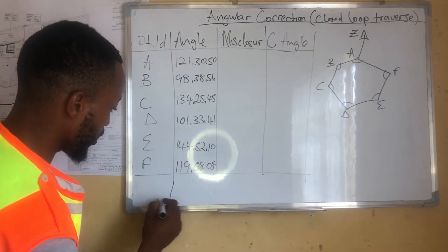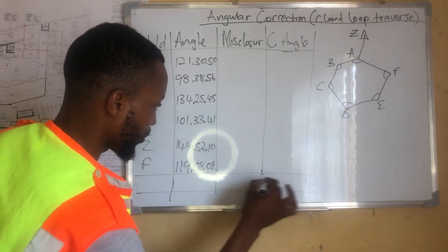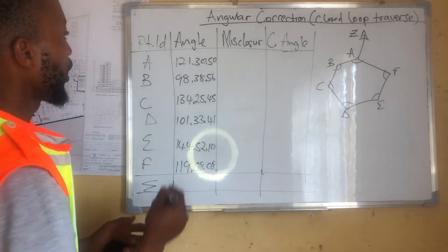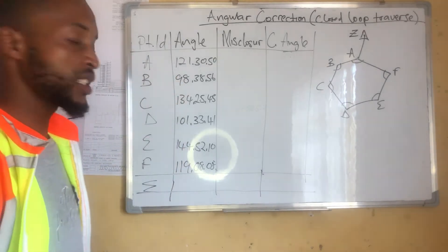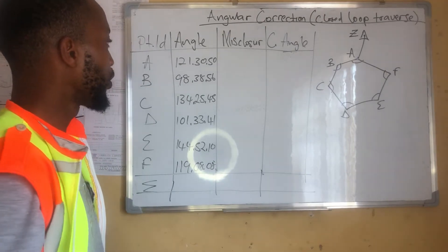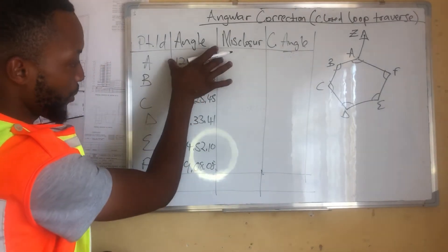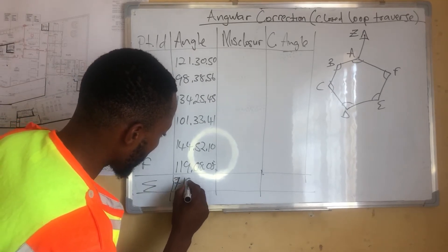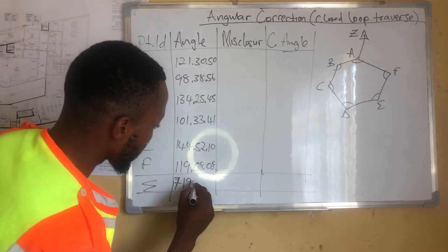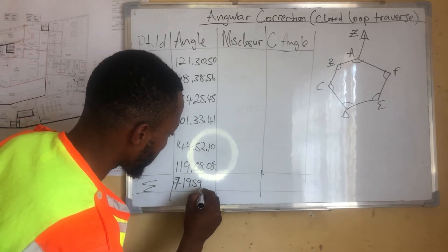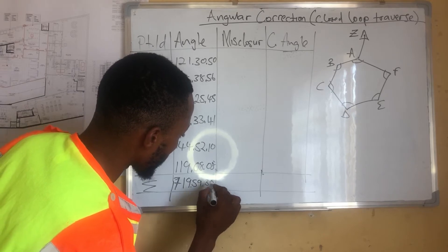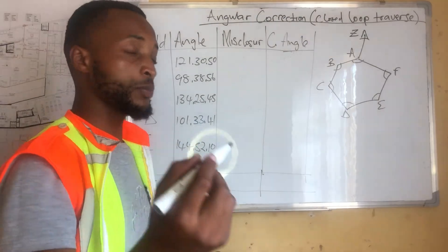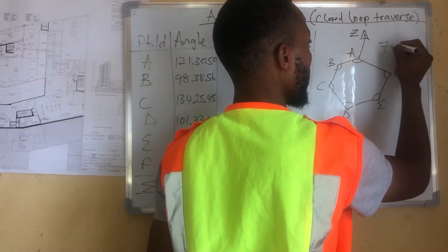In this year, the last row, we have our summation. If we sum up angle A, B, C, D, and E, and F, in this case, if we sum up what we have here, we'll get 719 degrees, 59 minutes, 30 seconds.